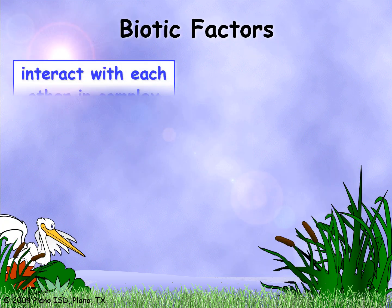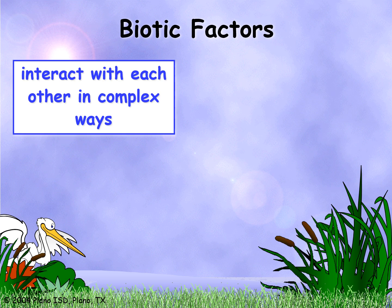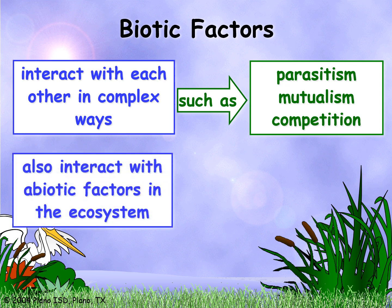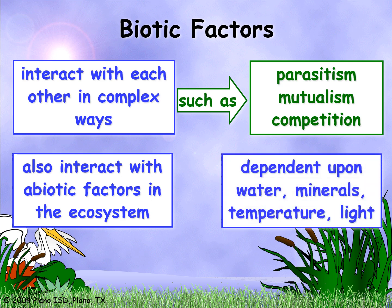Biotic factors interact with each other in complex ways such as parasitism, mutualism, and competition. They also interact with abiotic factors in the ecosystem, including water, minerals, temperature, and light.